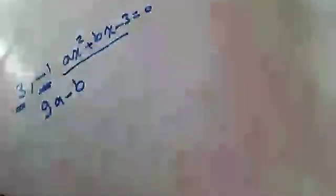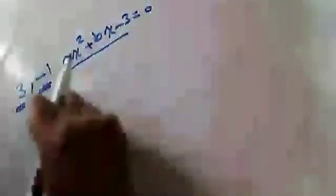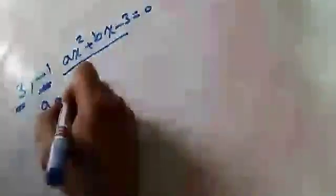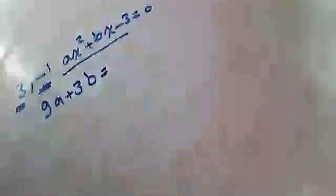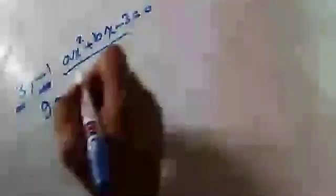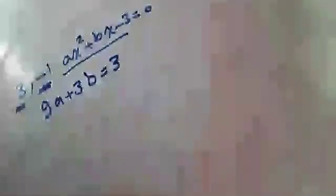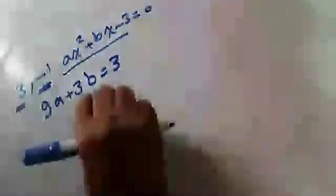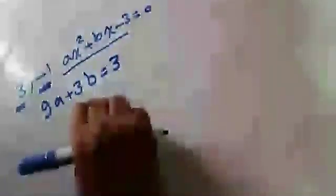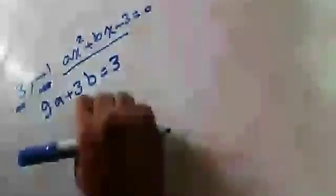يبقى عندنا 9a minus 3b. I'm going to work with 3. You're going to have: 9a minus 3b minus 3 equals zero — which is of the form ax plus by equals c. So: 9a minus 3b equals 3.